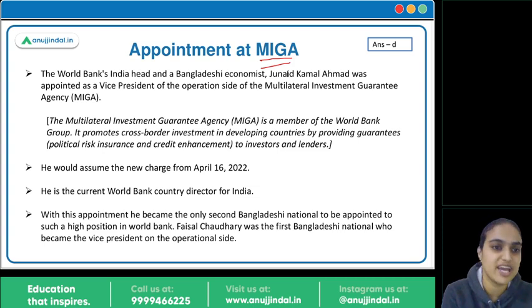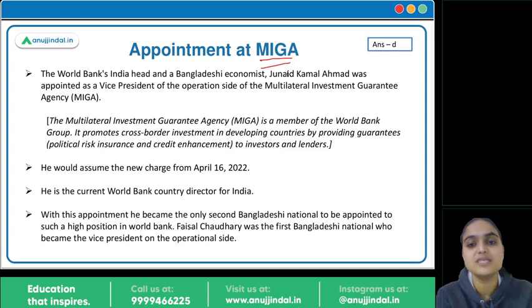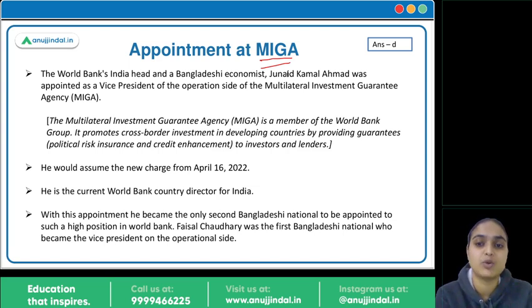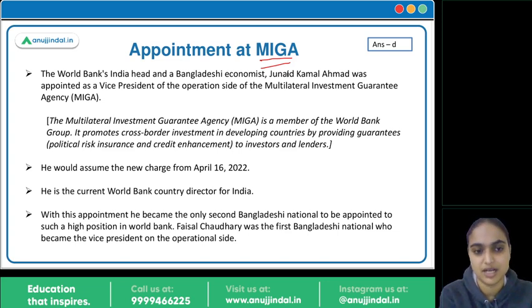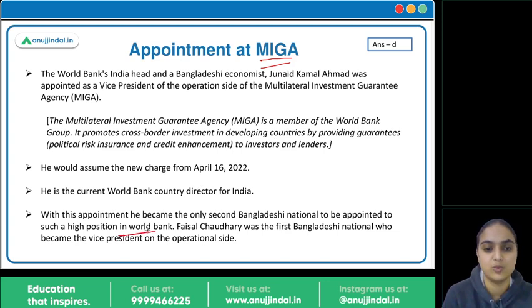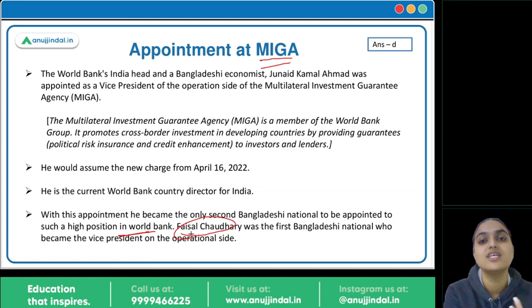MIGA — the Multilateral Investment Guarantee Agency — as a member of the World Bank Group, basically helps developing nations by providing them credit guarantees and insurance to investors and lenders. He is the second Bangladeshi national to be appointed at such a high position in the World Bank; before him, Faisal Chaudhuri held such a high position.